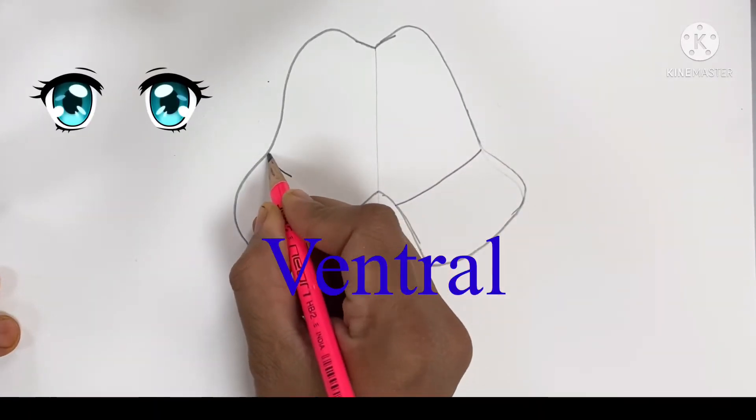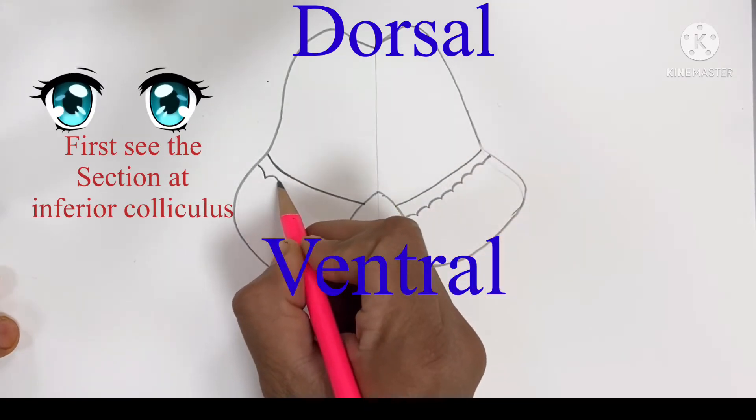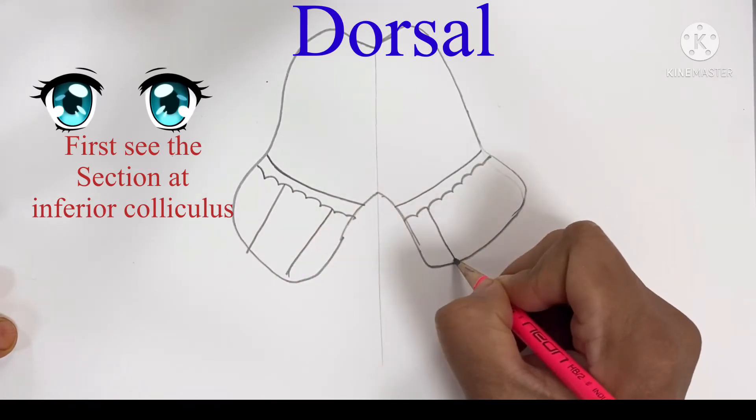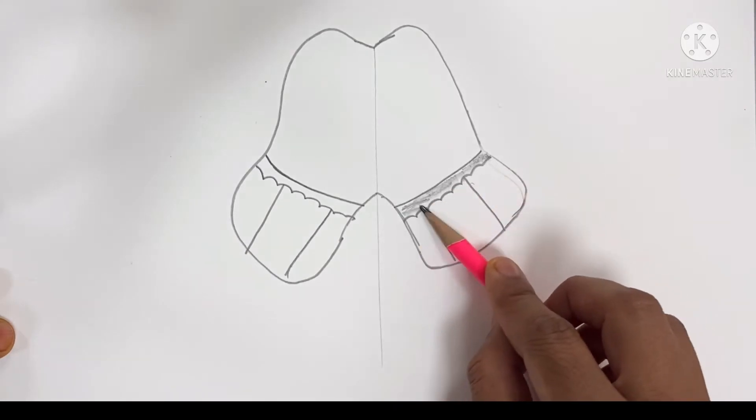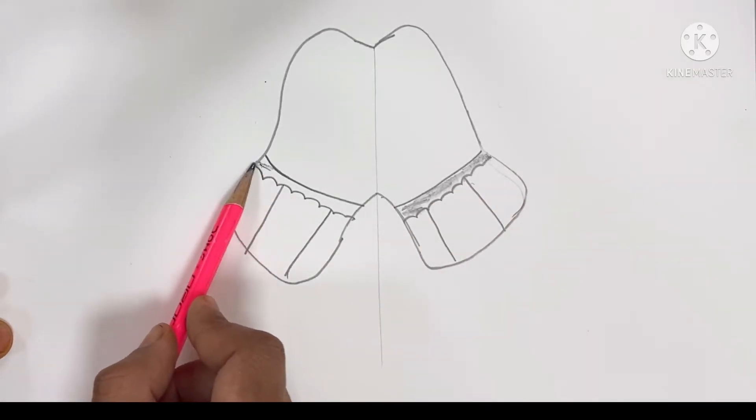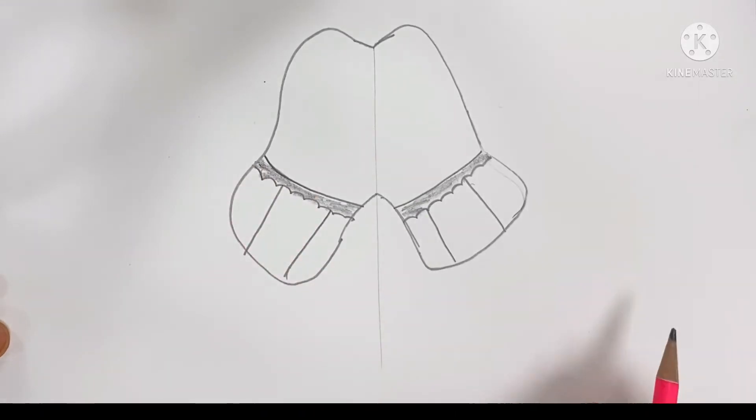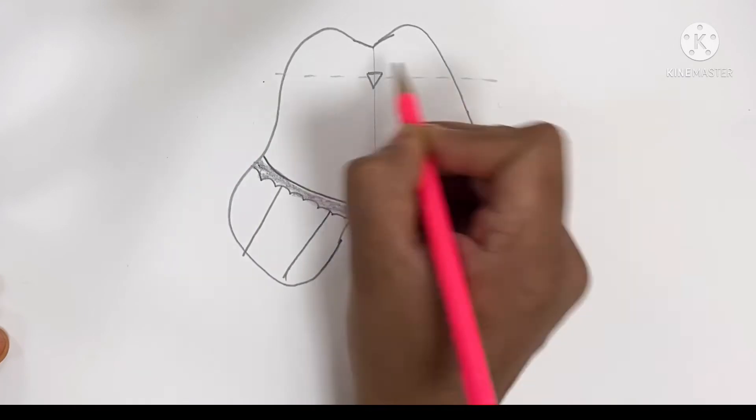Ventrally there lies a substantia nigra, and most anteriorly there is crura cerebri. Substantia nigra is gray matter. The cavity of the midbrain is the cerebral aqueduct.